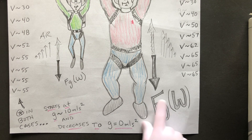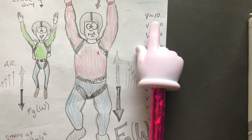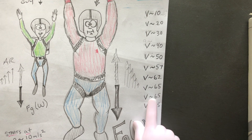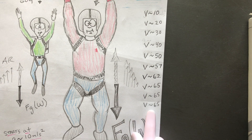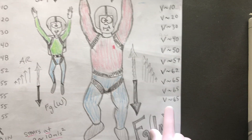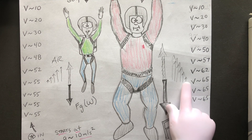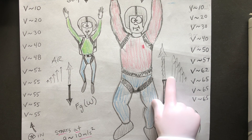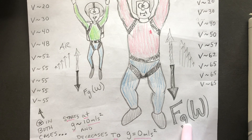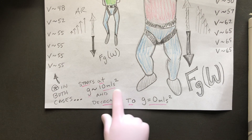The same thing happens to the bigger guy, but the bigger guy has a little bit more weight. Because of that extra weight, his velocities go 10, 20, 30, 40, 50, 57, 62, 65, 65, 65 — he reaches a much greater terminal velocity than the little guy, because he has to encounter more air resistance to equal his weight.